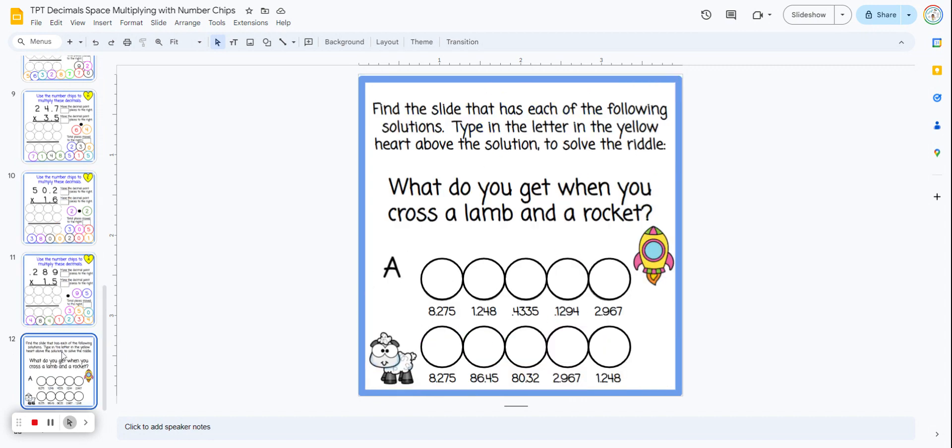And when they get to the final slide, they have all of these possible answers. So they're going to go back over the previous slides, find these answers, and then type in the letter in the yellow heart above its answer, above its product.